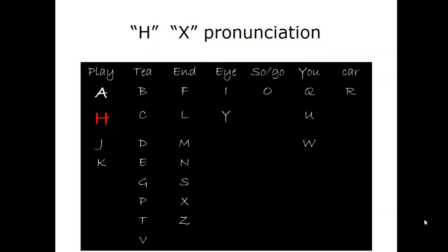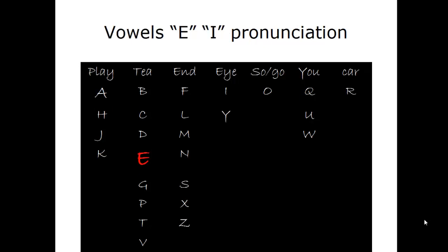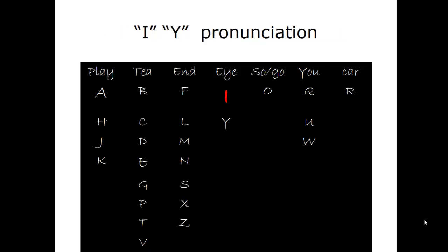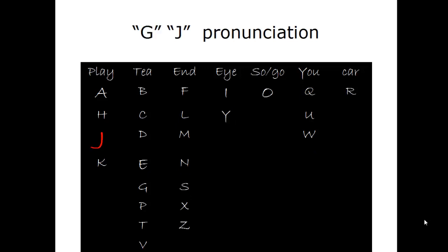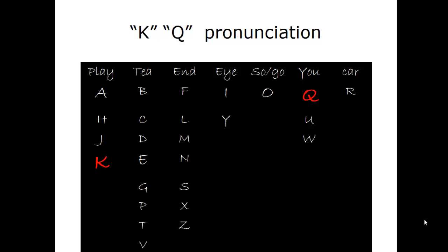So here are two letters, H and X. H, X. Here's another one, E and I. Two vowels, E, I. Then we have I and Y. I and Y. And then we have J and G. K and Q. K and Q.